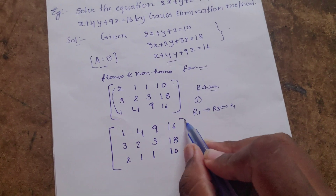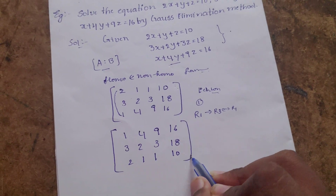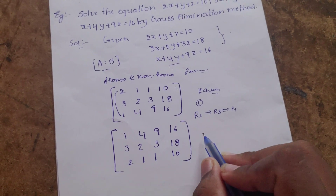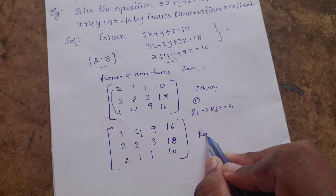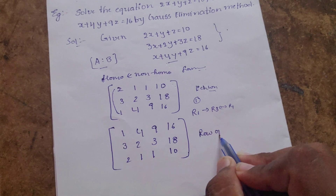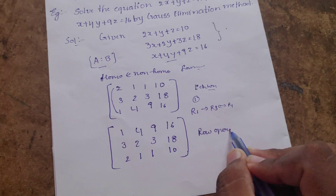So this is the lower triangle matrix. The first row is 3, 2, 3, 18 and the second row is 2, 1, 1, 10. Column 1, R2, R3 will become zero.